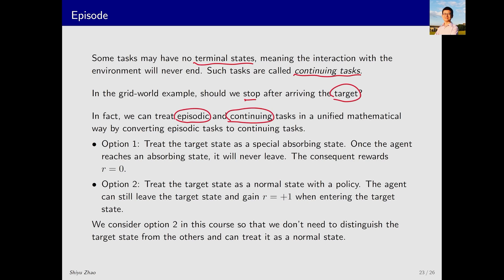In fact, we can treat episodic and continuing tasks in a unified mathematical way by converting episodic tasks to continuing tasks. There are two options to do that. Option one is to treat the target state as a special absorbing state. What is an absorbing state? If the current state is the target state, then regardless of the action taken, it will remain in this state. We can modify its action space to make this happen. Thus, through this method, we can transform an episodic task into a continuing task. What is the other option? Treat the target state as a normal state with a policy. If the policy is good, it will remain there to continuously collect positive rewards. If the policy is not good, it might exit that state. In this course, we consider option two, which is more general so that we do not need to distinguish the target state from others and can treat it as a normal state.